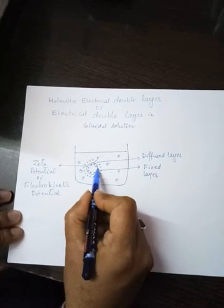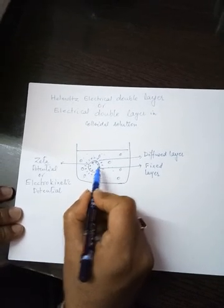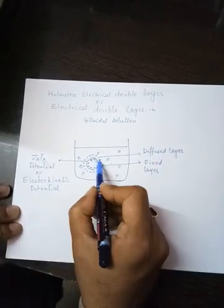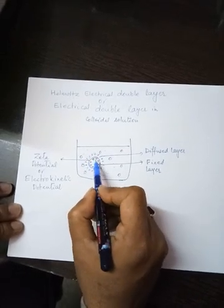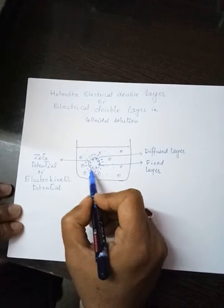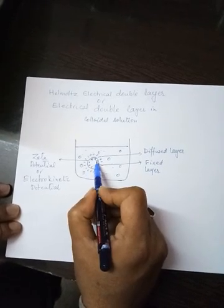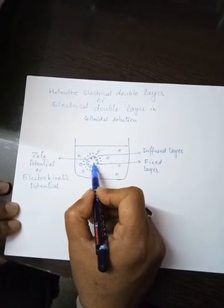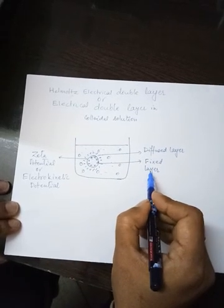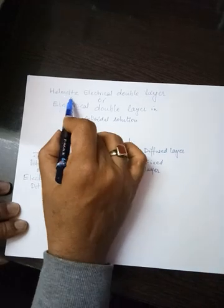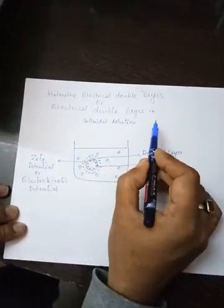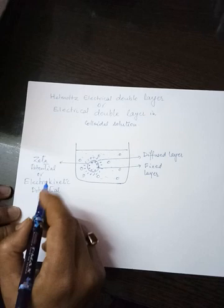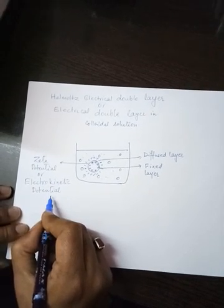The potential difference between these two layers is known as zeta potential or electrokinetic potential. The diffuse layer can change, move, or be replaced by other negatively charged ions, while the positive layer is fixed — these charged particles are adsorbed strongly at the surface. Together, these two layers are known as the Helmholtz electrical double layer, and the potential difference between the fixed layer and the diffuse layer is known as zeta potential or electrokinetic potential.